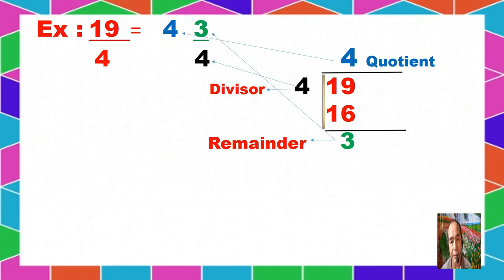Now we will distribute the result. The quotient of 4 will become our whole number. 3, which is the remainder, will become our numerator. And 4, which is the divisor, will become the denominator. So the result of dividing 19 over 4 is 4 and 3 fourths. This is now the mixed number.